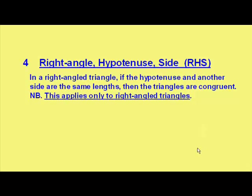This is the fifth video on the subject of congruent triangles, and we're going to be looking at a fourth way of deciding whether or not two triangles are congruent to each other. It's called the right angle hypotenuse side method, RHS for short.